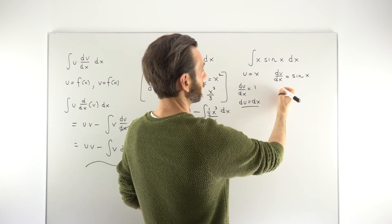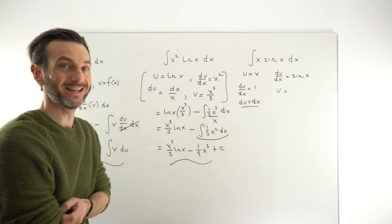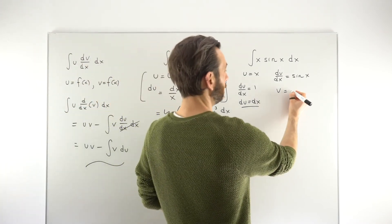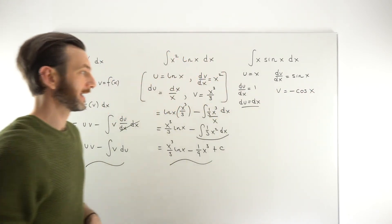So that gives us what we need there with the u's. We've got dv/dx. We need to integrate both sides to get v. So v is going to be the integral of sine x. Sine integrates to negative cosine. So it's going to be negative cosine x.